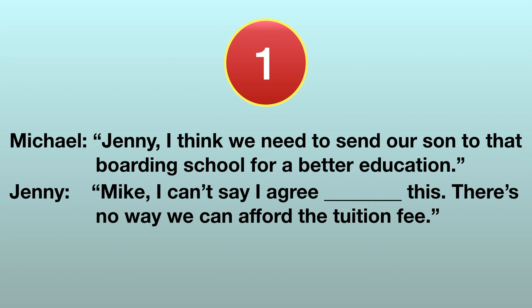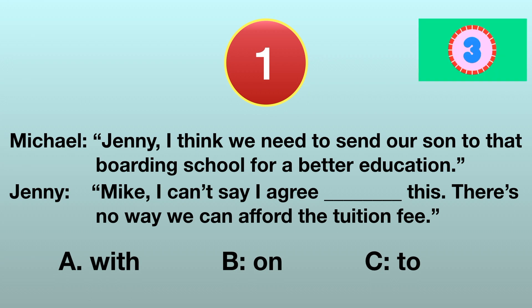In this case, which preposition should go after Agree? A. With, B. On, C. To. The answer is With — Agree With. A boarding school is a school where most students live on campus and only go home at weekends or on holidays, usually charging a higher tuition fee. Jenny says they can't afford the tuition fee, meaning she is clearly not supportive of Michael's proposal. So the correct preposition is With — Jenny does not agree with Michael's idea.